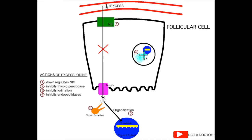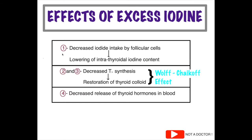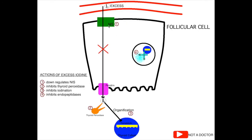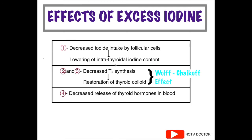The next action is that iodopeptides inhibit the action of endopeptidases released by the lysosomes. As endopeptidases are inhibited, cutting of the thyroglobulin molecule will not occur and T3 and T4 will not be released into the blood circulation. In summary: inhibition of the sodium-iodine symporter causes decreased iodide intake, lowering intrathyroidal iodine content; inhibition of thyroid peroxidase causes decreased thyroid hormone synthesis and restoration of thyroid colloid — this is the Wolf-Chaikoff effect; and endopeptidase inhibition causes decreased release of thyroid hormones.